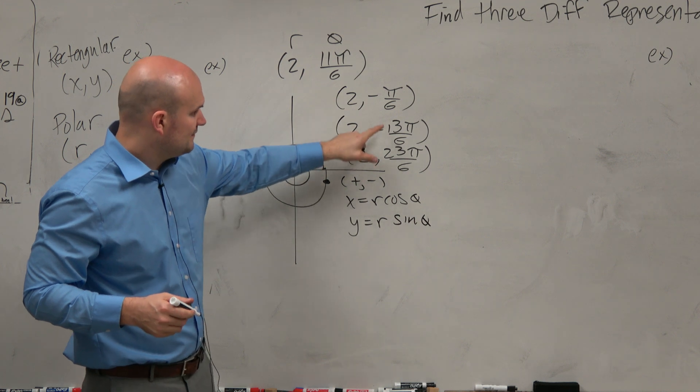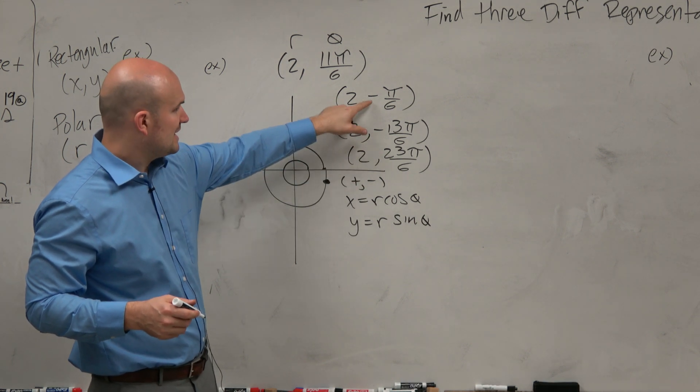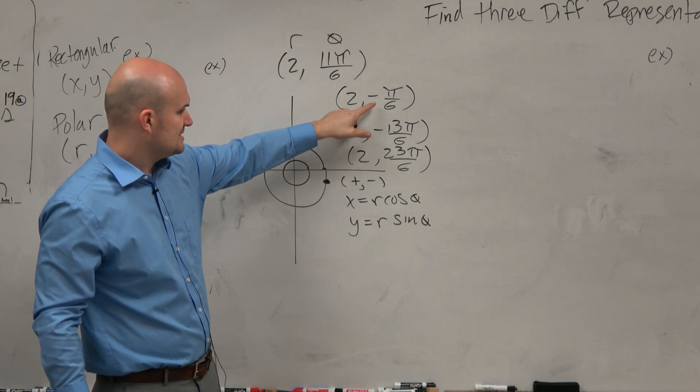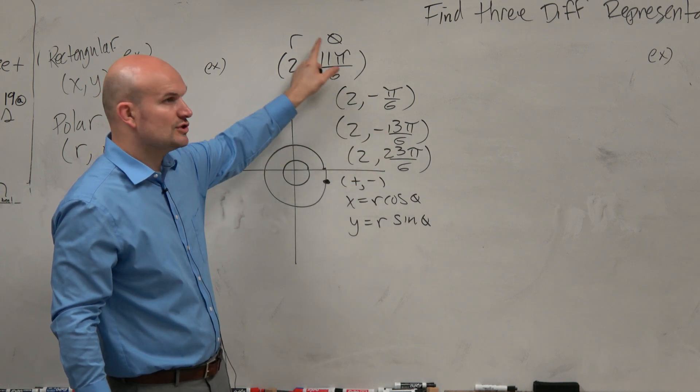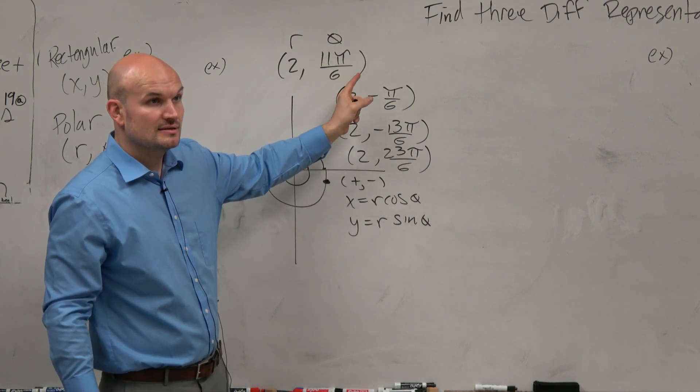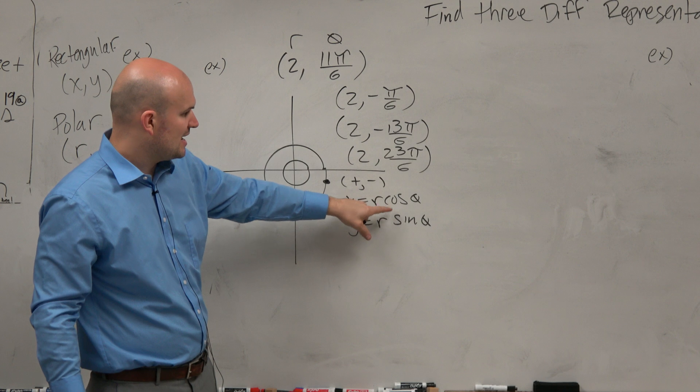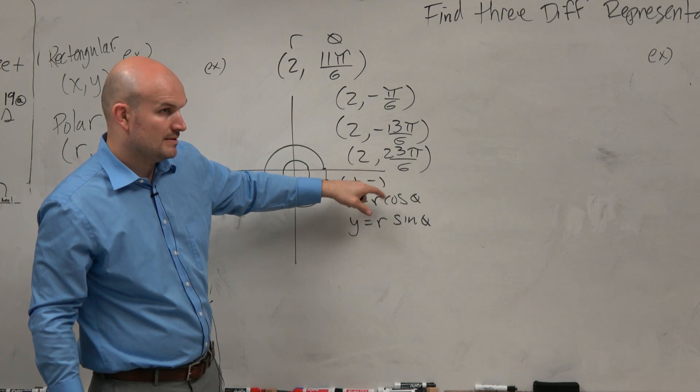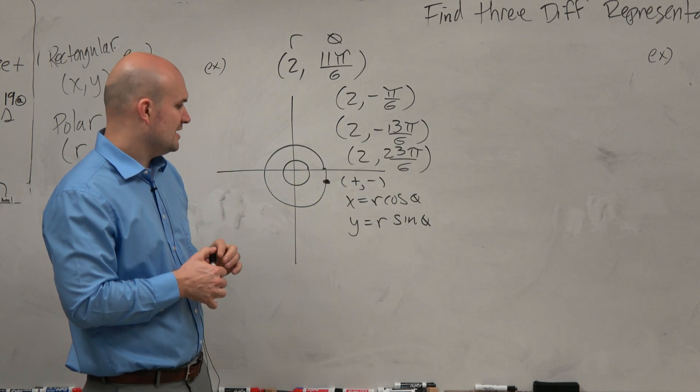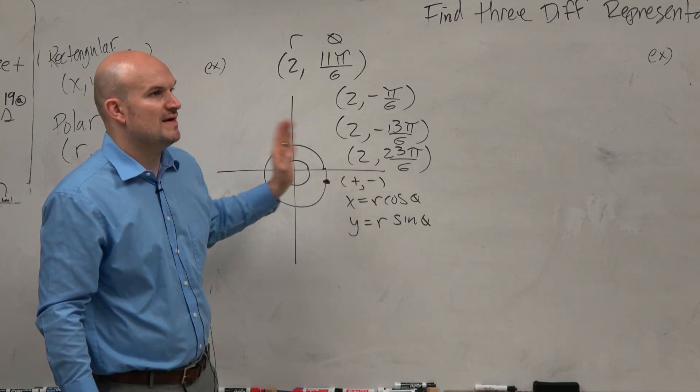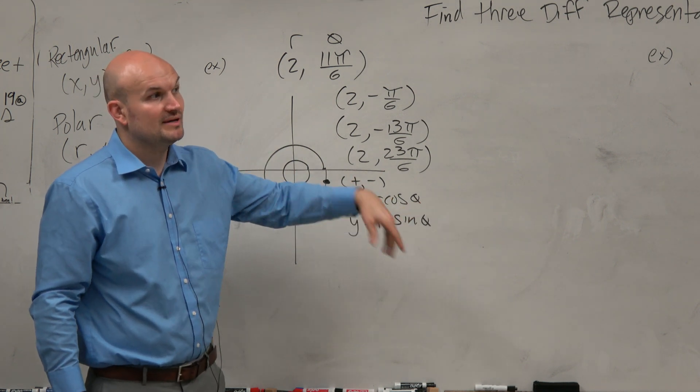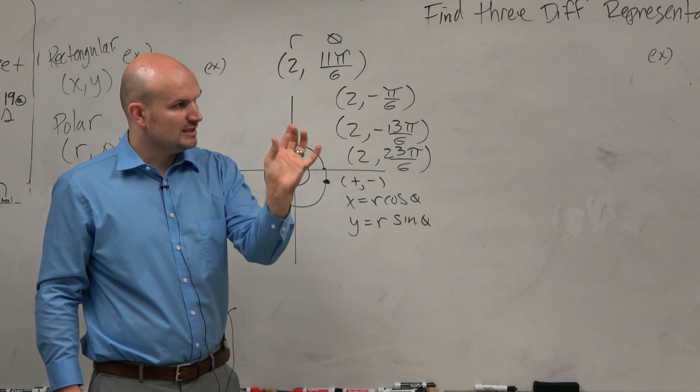So when you do that for all of these points, right? Think about negative π over 6. That is in the fourth. All of these angles are in the fourth quadrant, correct? So when you do R times sine and cosine, you're going to get positive negative. But could you also get a point that's negative positive and then multiply it by a negative number? Because remember, R is really like a scalar, right?